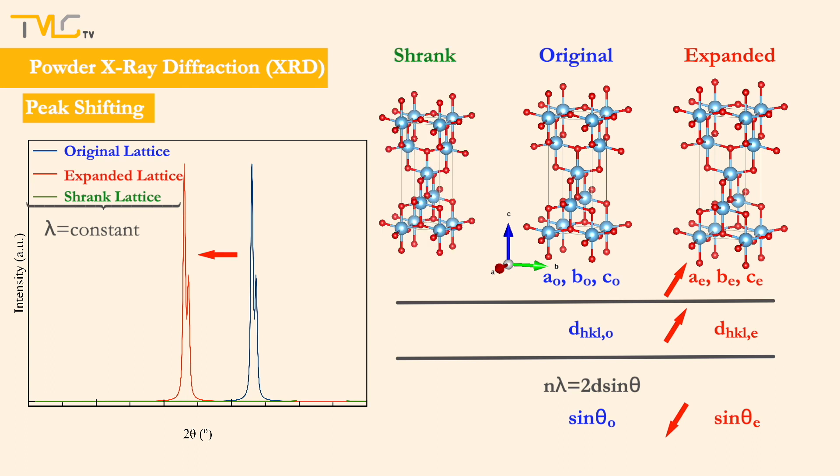Or, if lattice shrinks, then the lattice parameters will decrease and lead to a decrease in the interplanar spacing of the selected plane. Lower interplanar spacing will lead to an increase in sin θ, shifting the corresponding peak to higher 2θ values.